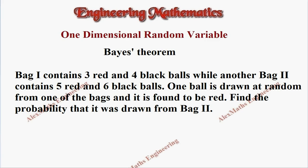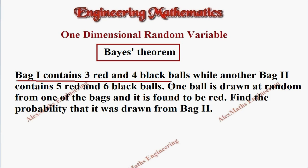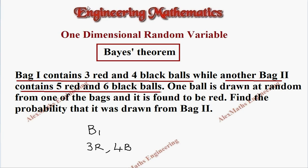Hi students, this is Alex. In this video we are going to solve a problem from Bayes' theorem. Bag one contains three red and four black balls — let's write B1. Another bag two contains five red and six black balls — we take B2. One ball is drawn at random from one of the bags.